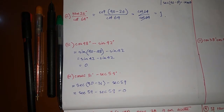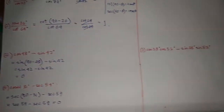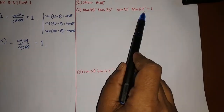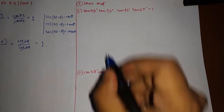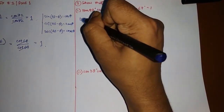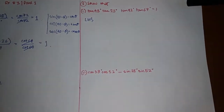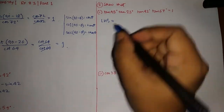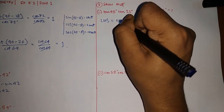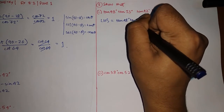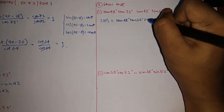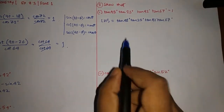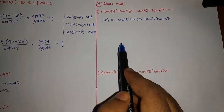Now let's jump into the second question. It says: show that the left hand side equals the right hand side. First, write the LHS — what is given on the left hand side: tan 48° · tan 23° · tan 42° · tan 67°. We need to convert some of these tan ratios into cot.